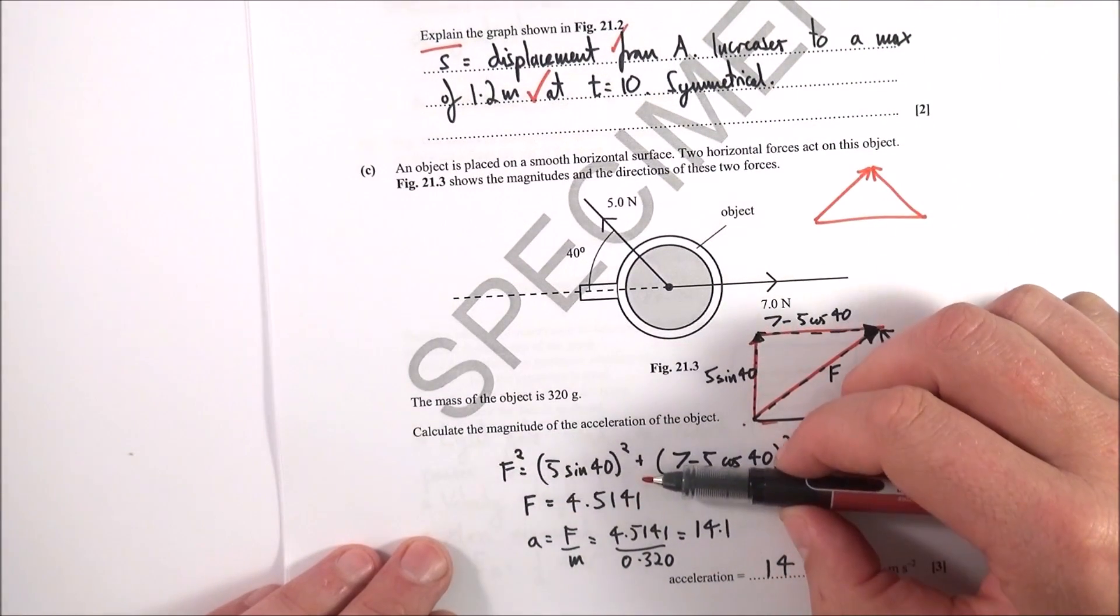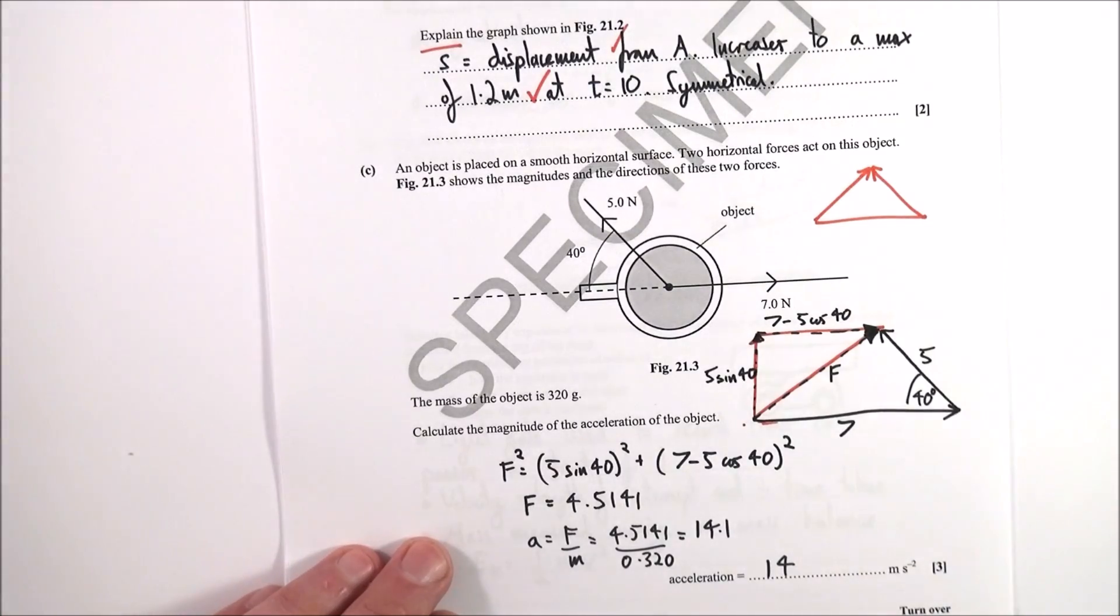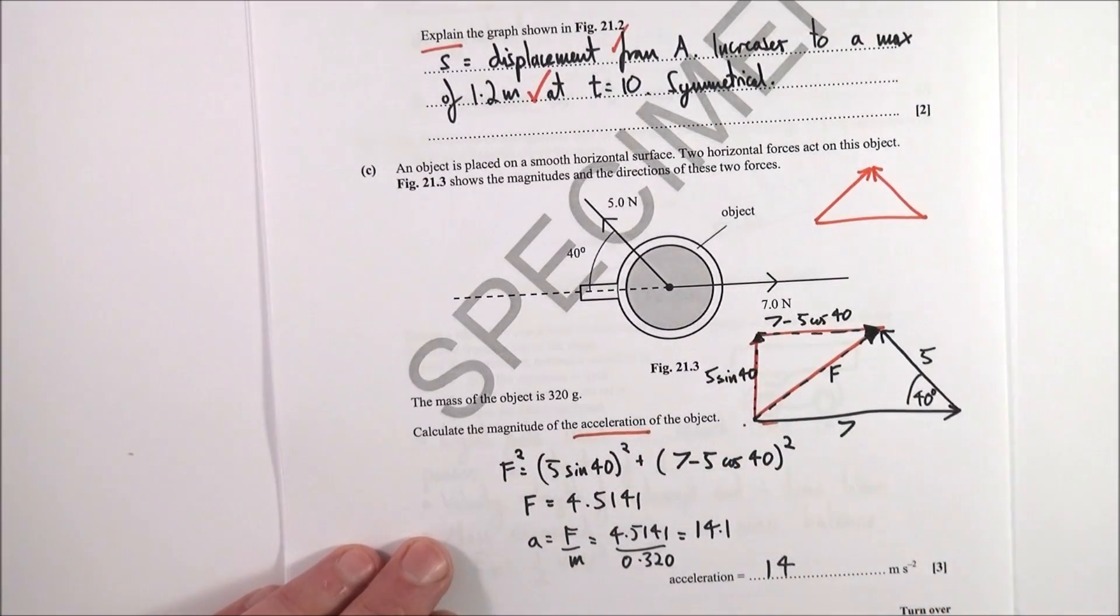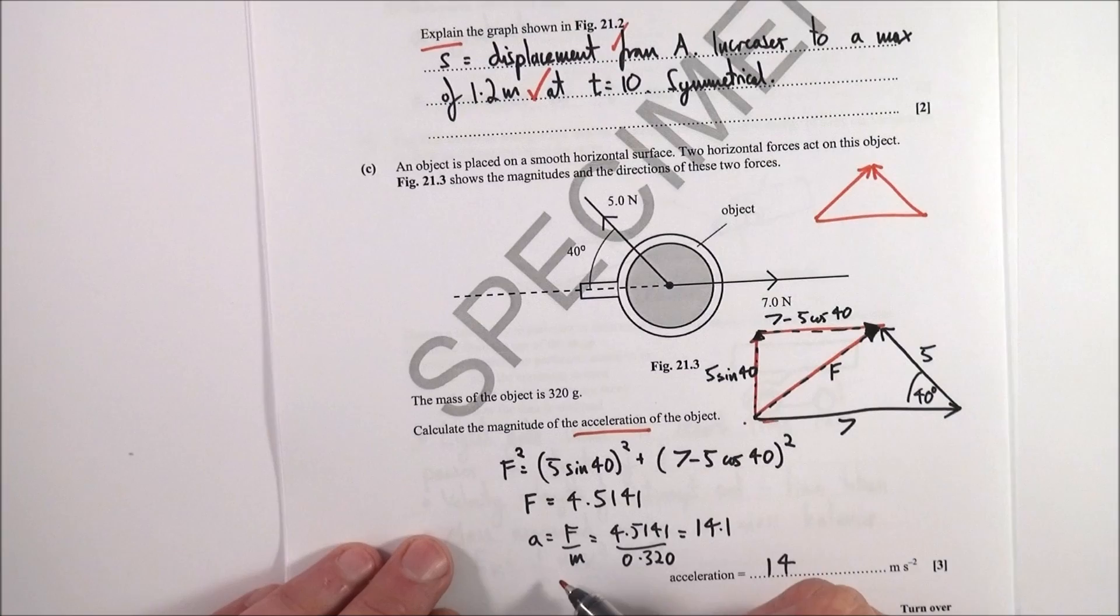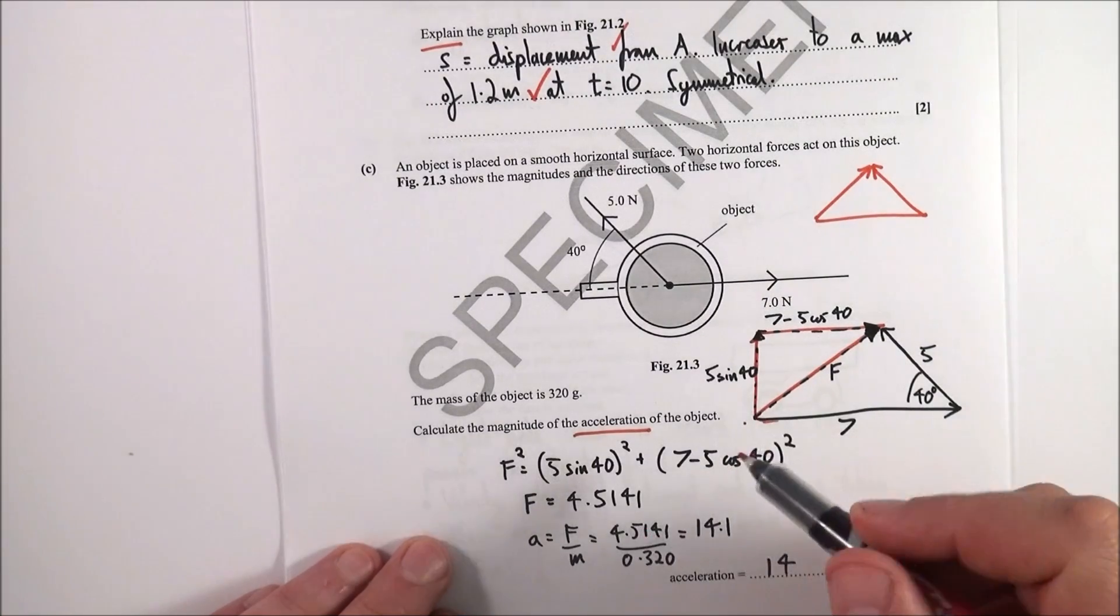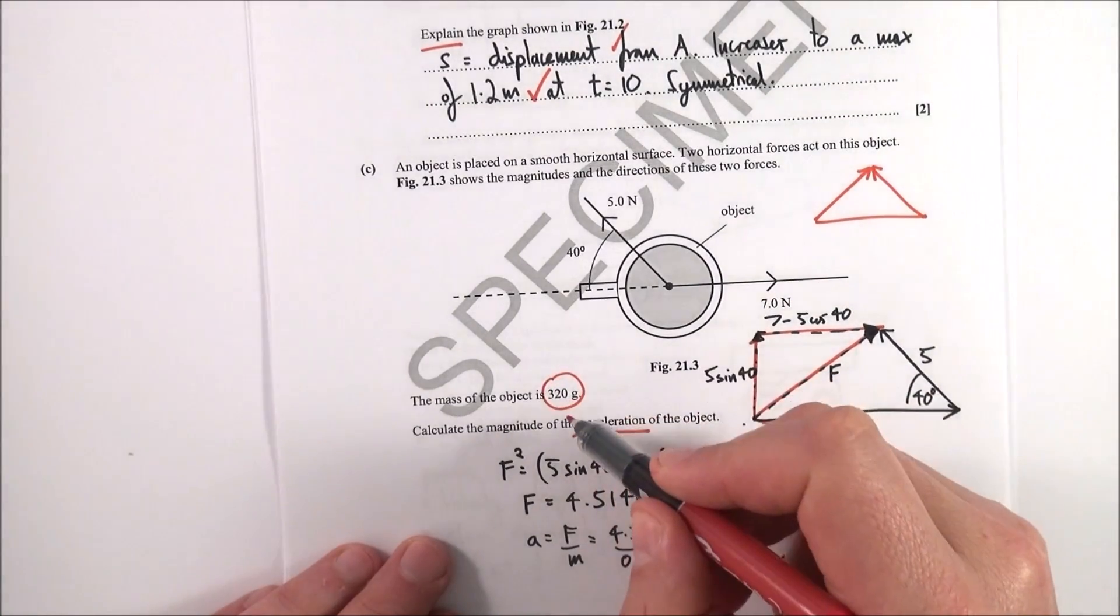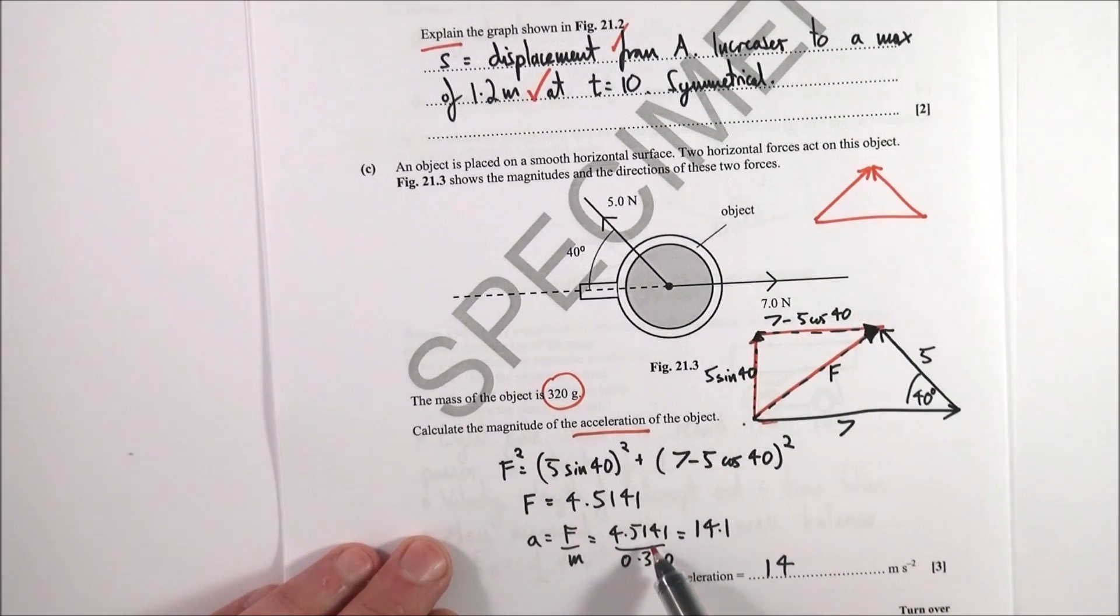I've kept the full number in my calculator, but we want to know the acceleration of the object, and acceleration is equal to force divided by the mass. We just worked out the force. The mass is given in grams, we've got to convert that into kilograms. So the force of 4.5141 over 0.320 equals 14.1.